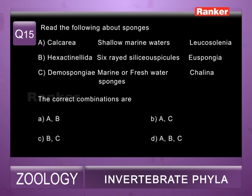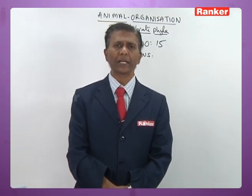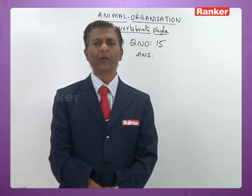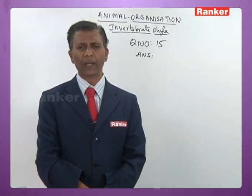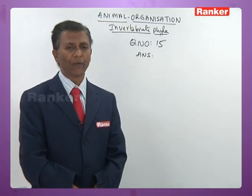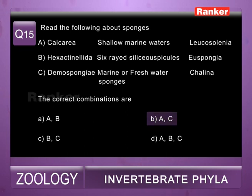Fifteenth question: read the following about sponges — a) Calcarea: shallow marine water sponges, example Leucosolenia; b) Hexactinellida: six-rayed siliceous spicules, example Euspongia; c) Demospongia: marine or freshwater sponges, example Chalina. Option a is correct — Leucosolenia is a valid example for Calcarea. Option b is wrong — Euspongia belongs to Demospongia, not Hexactinellida. Option c is correct. So correct combinations are a and c; fifteenth question correct answer is b.